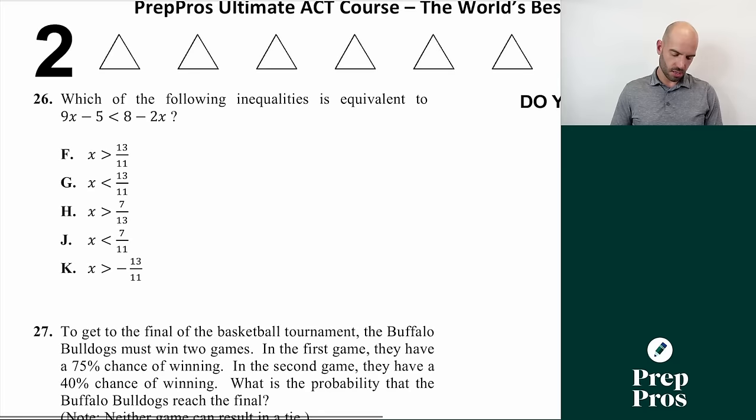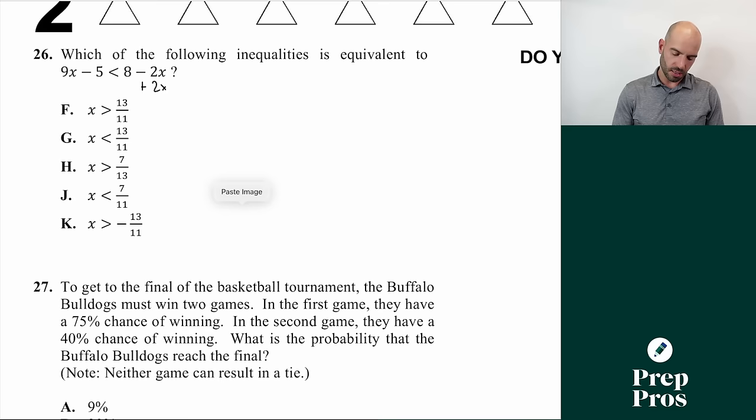Number twenty-six: solve the inequality. Combine like terms by adding 2x to both sides and adding 5 to both sides, giving 11x less than 13. Divide both sides by 11 to get x less than 13/11. The answer is G. Remember: only flip the inequality sign when dividing by a negative number.